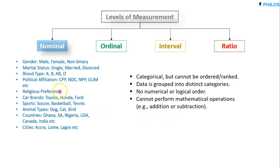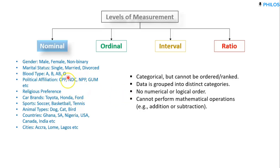Since you cannot perform those mathematical operations, it also means you cannot calculate the mean for nominal data. You can only find the mode. You can also prepare a frequency table showing male with its frequency and female with its frequency. For charts, you can draw a pie chart or a bar chart for it as well.